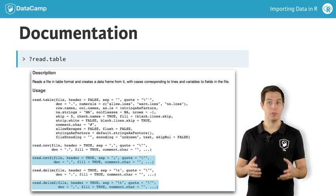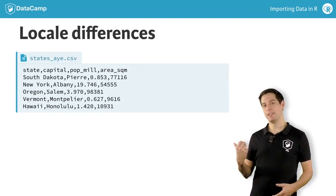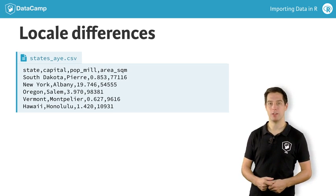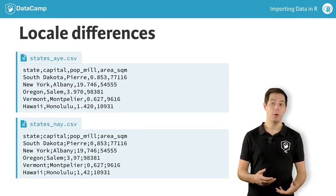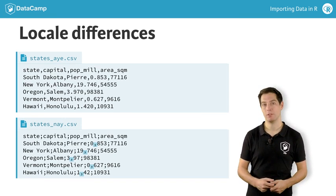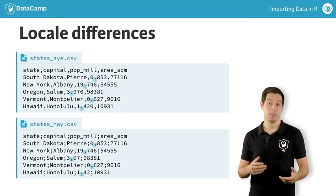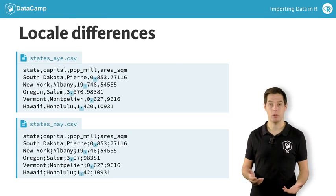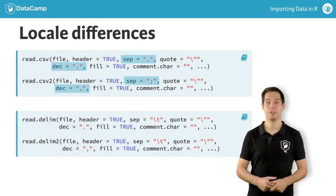These functions exist to deal with regional differences in representing numbers. Have a look at this CSV file, statesi.csv, typical for the US and Great Britain, and its counterpart, statesne.csv. You'll notice that statesne uses commas for decimal points, as opposed to the dot for statesi.csv. This means they can't use the comma as the field delimiter anymore — they need a semicolon.